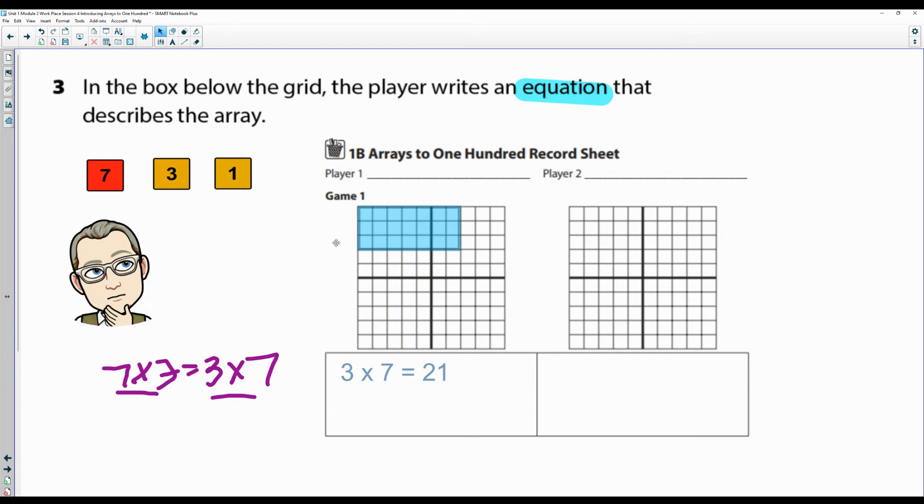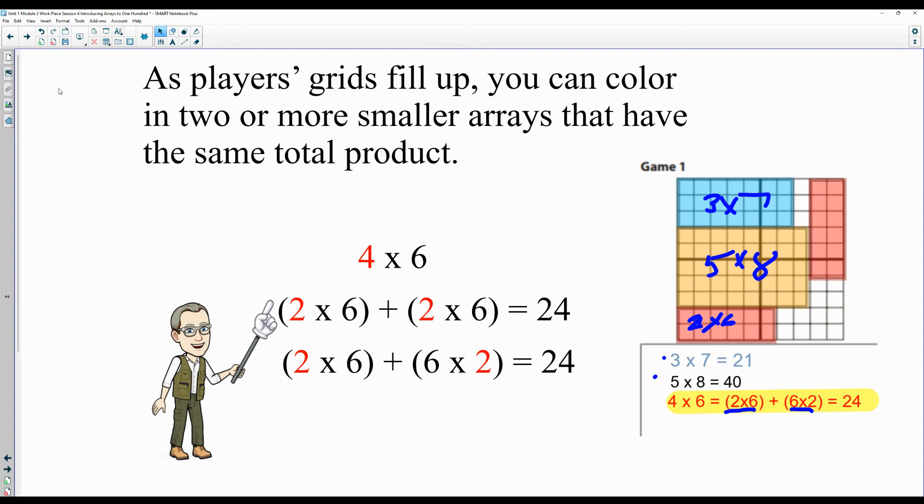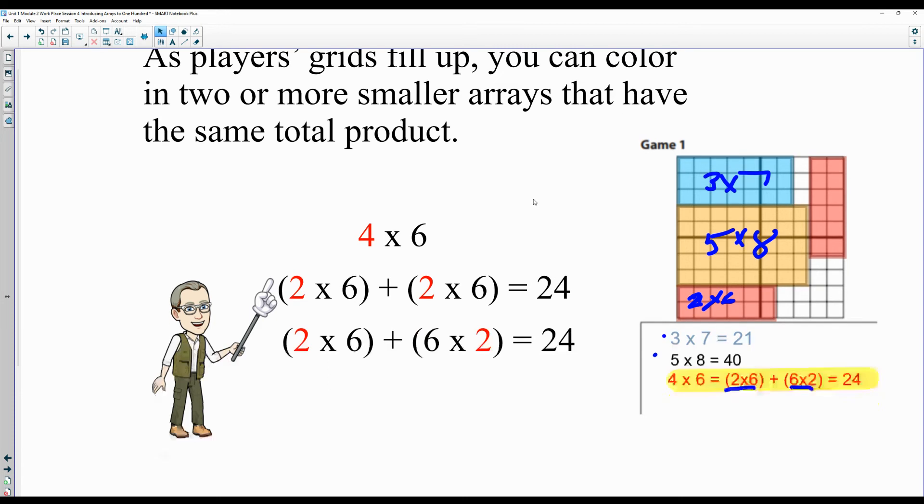Now as the players fill up the grids, you can color in two or more ones - remember we can break it apart into partial products. So two times six - all these right here, let's just go back - all these, like these two right here are filled in: three times seven, five times eight.